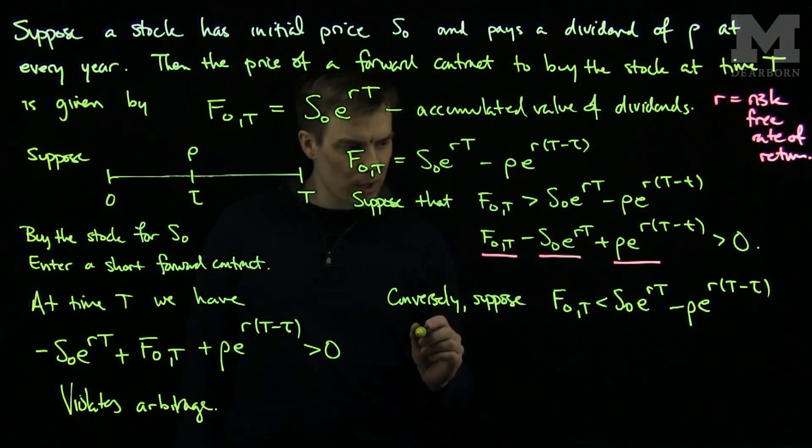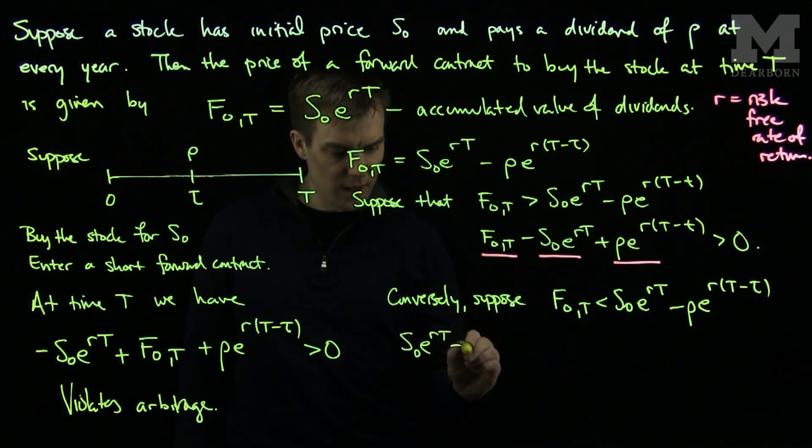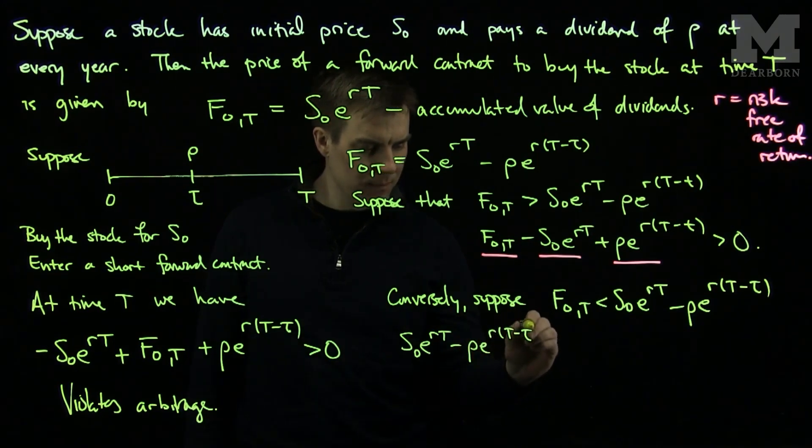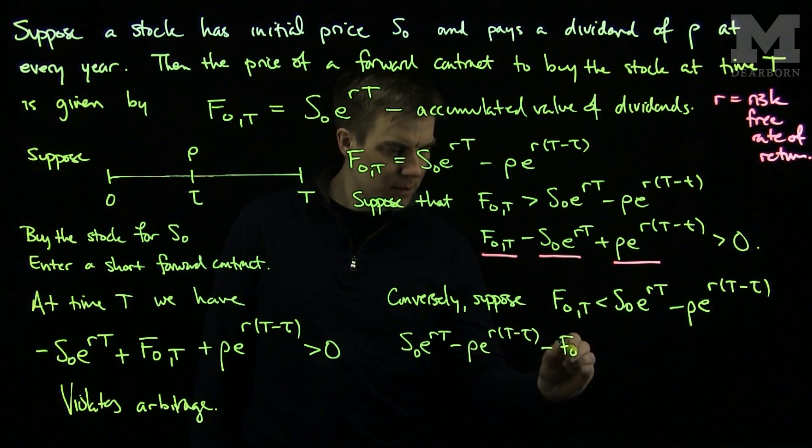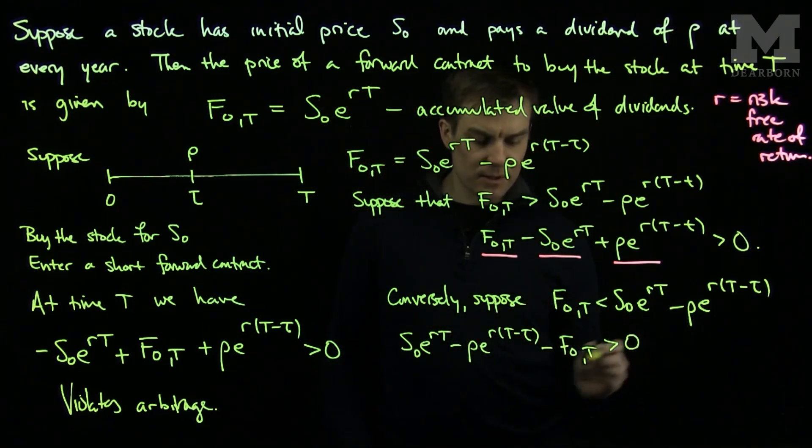If we rewrite this, we can rewrite this as S0 e to the rT minus rho e to the r(T-tau) minus F0T, is strictly bigger than zero.